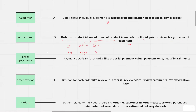The next important table is order payments. It has data related to how payments have been made for a particular order. For every order, what is the total payment value in a particular transaction, what is the payment type — meaning whether the payment was made through credit card or debit card, etc. — and whether the customer has opted for a number of installments to pay for the specific order.